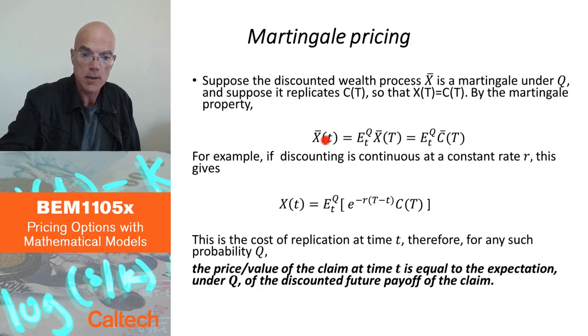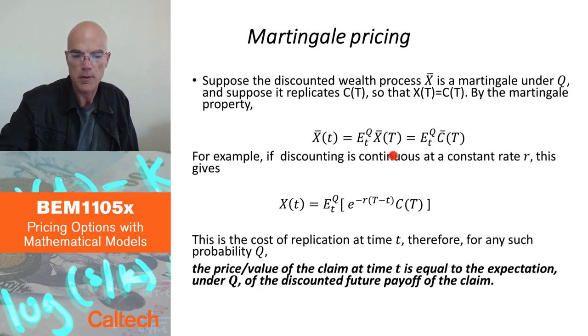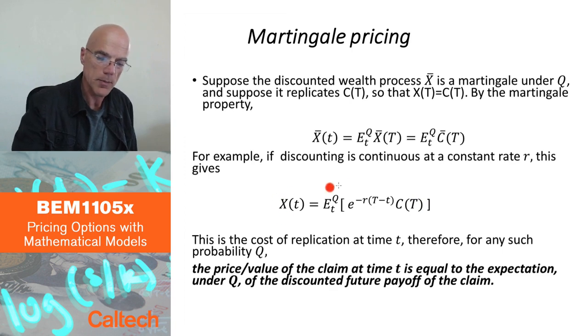So, the discounted cost of replicating is equal to the expected value of the discounted payoff of our option, our claim. So, if I de-discount, for example, if the discounting is done at the constant continuous compounded rate R, and I move discounting to the other side, this is the same as saying that X of T is equal to conditional expectation at time T under Q of discounted future payoff, C of T.